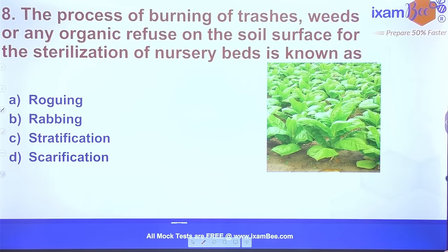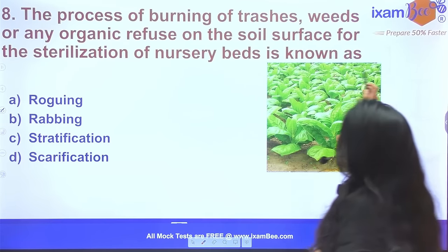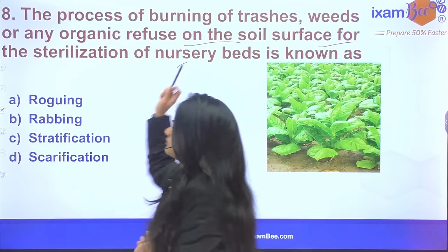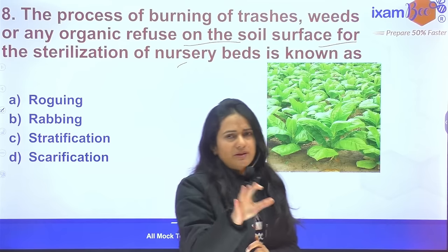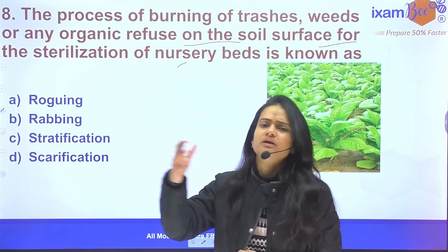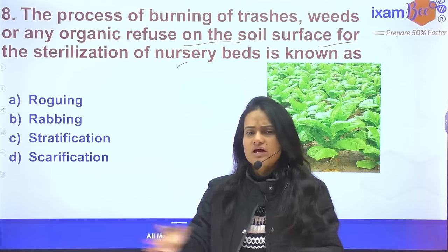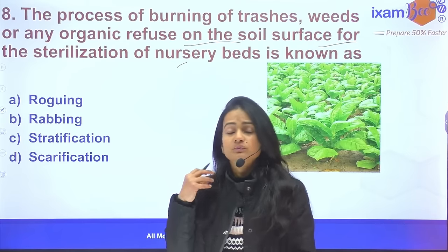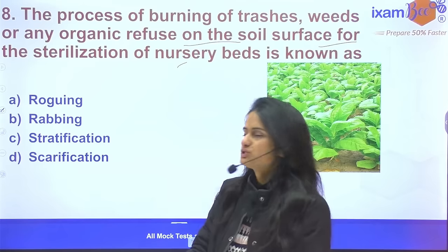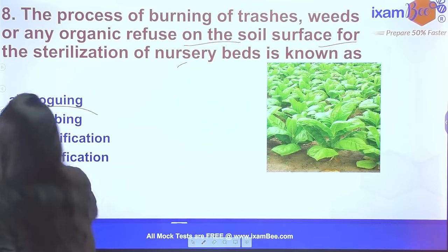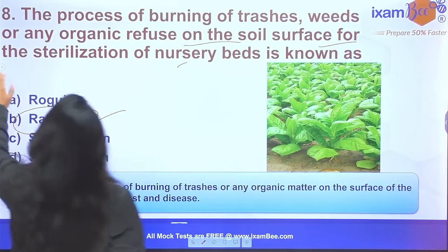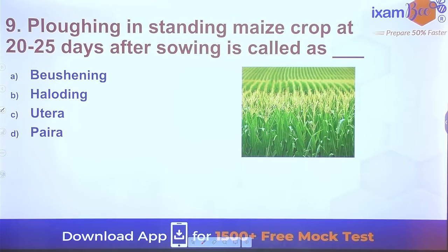Question 8: The process of burning trash, weeds, or any organic refuse on the soil surface for sterilization — done in tobacco crop nursery or main field — what operation is this known as? This is called the rabbing process.